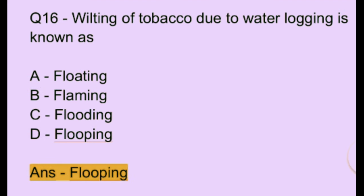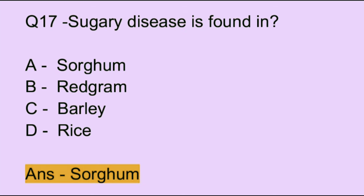Question number 16. Wilting of tobacco due to water logging is known as: Option A: floating. Option B: flaming. Option C: flooding. Option D: flopping. The correct answer is option D, which is flopping.